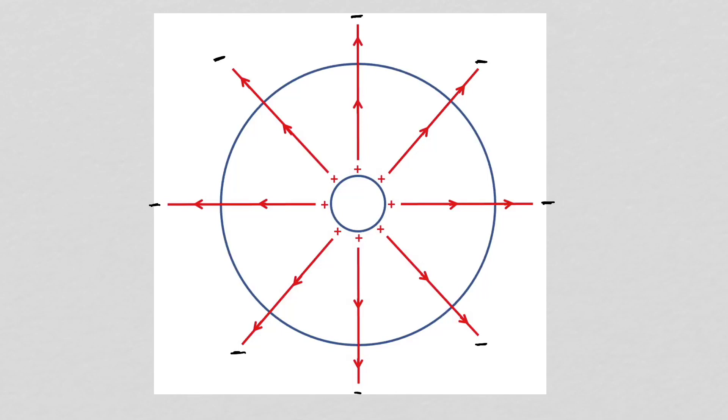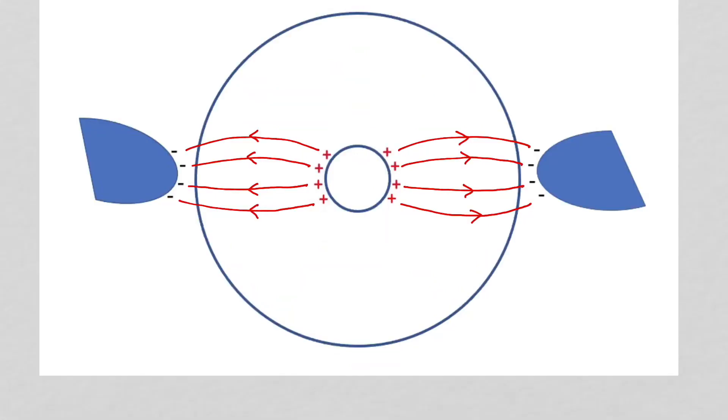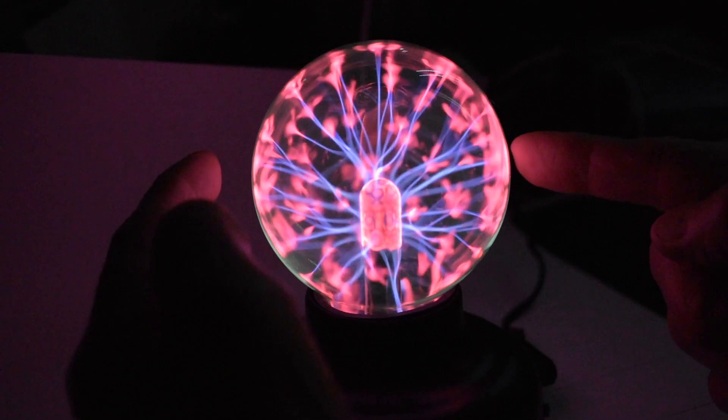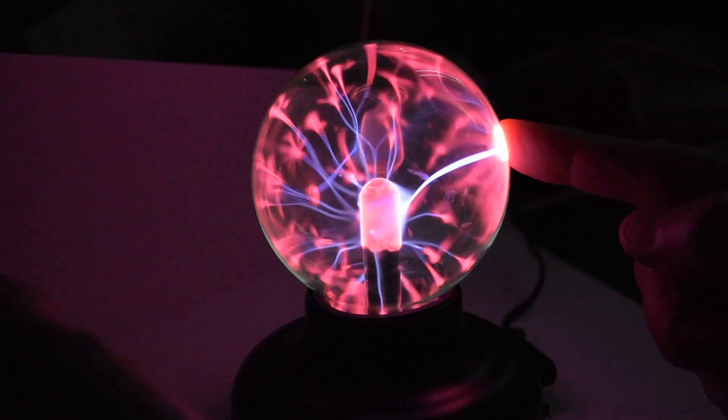As I approach the globe, I will act as a ground, a source of those negative charges. So the electric fields emanating from the positive charges do not have to go off to infinity looking for negative charges to terminate on. They will find those in my fingers. The positive charges will rearrange, increasing the electric field intensity between the Tesla coil and my fingers and reducing the electric field intensity everywhere else. The plasma will intensify in these increased electric field intensity regions and reduce elsewhere. This explains the formation of the dominant filaments when the globe is touched.